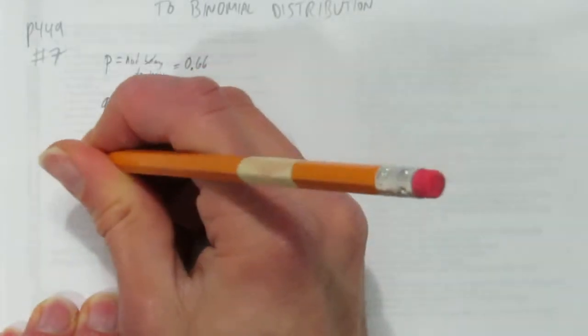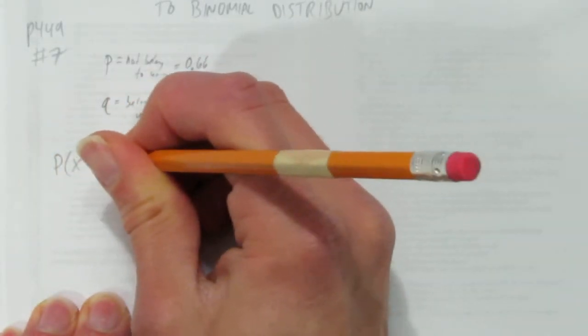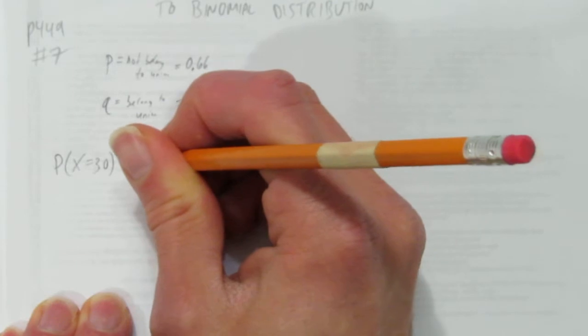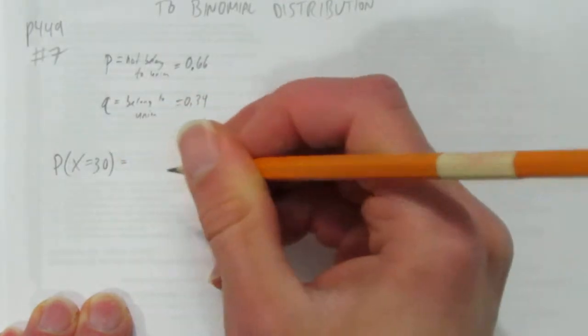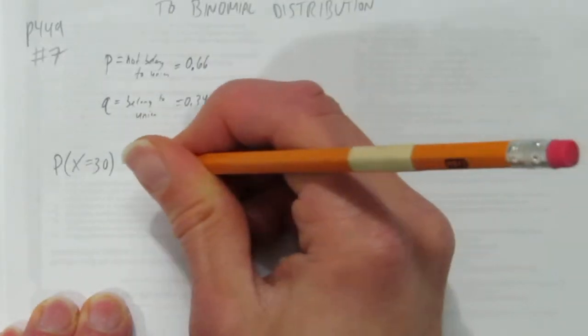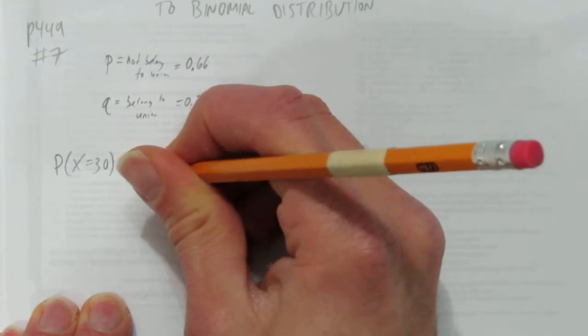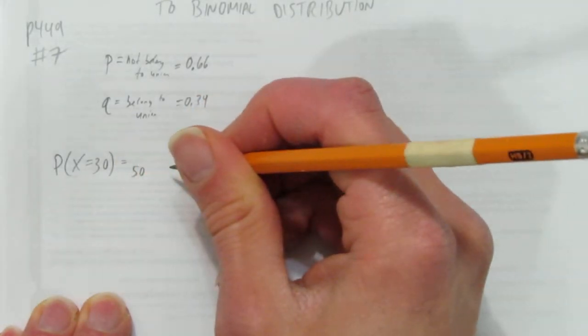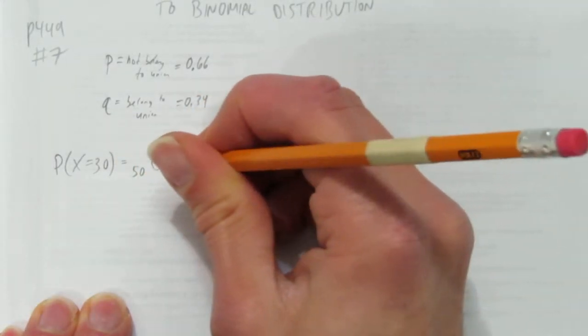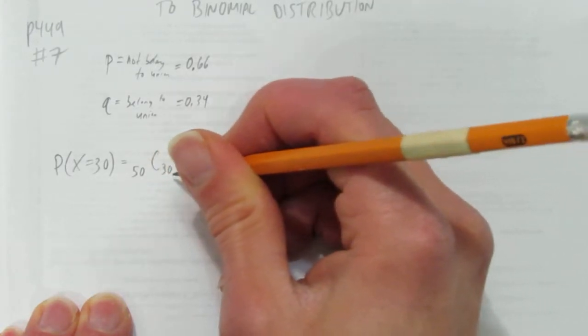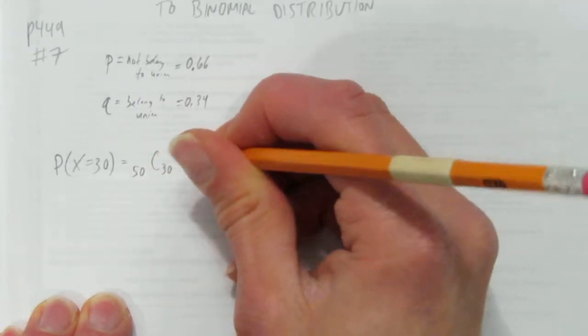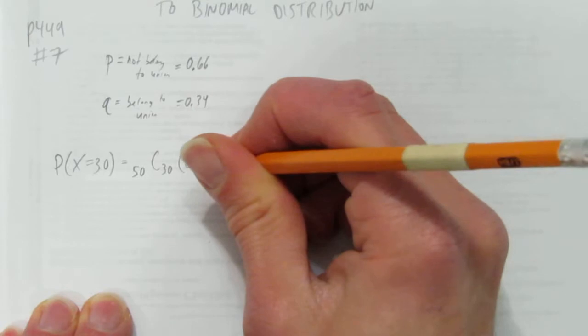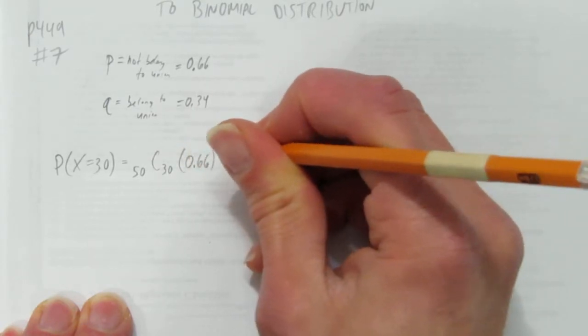Okay, so binomial distribution just says if you're looking for X equal to 30, you just use your binomial distribution, which we learned in previous unit. That's 50 people, she's surveying 50 people and we're looking for 30 of them to not belong to the union. So our not belong to the union success rate happens 30 times.